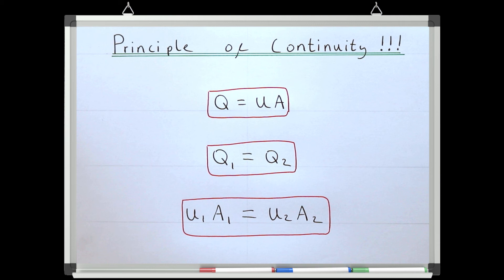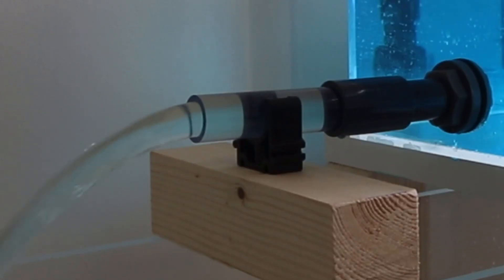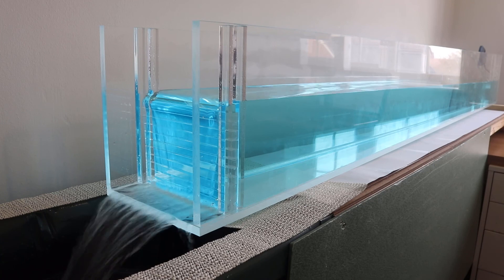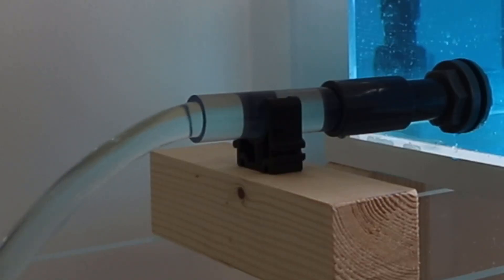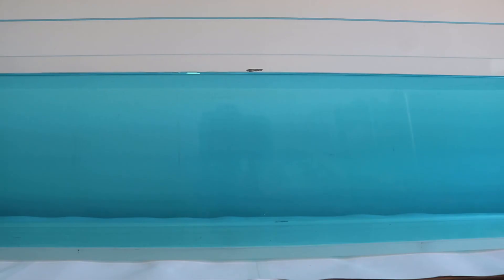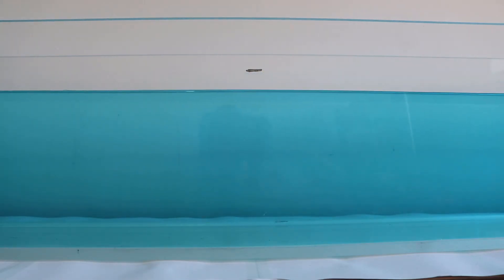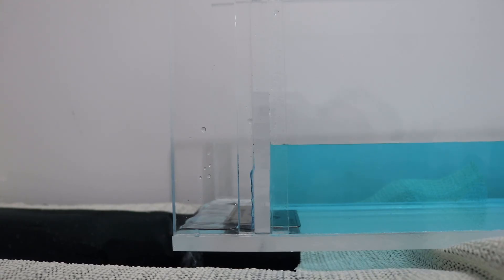To summarise what we've learnt in this video, the principle of continuity shown in these equations can be used to work out the cross-sectional area or velocity for a flow, as long as we know the discharge is the same between the two points we're applying it to. This framework is valid for steady pipe flow and steady open channel flow, and unsteady pipe flow for a single instant in time, but cannot be applied in this form for unsteady open channel flow. For unsteady open channel flow, there would need to be an additional storage term added to these equations.